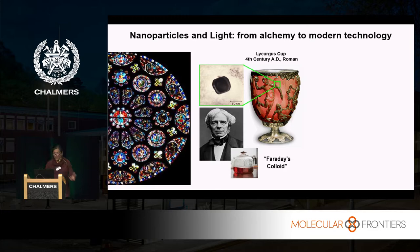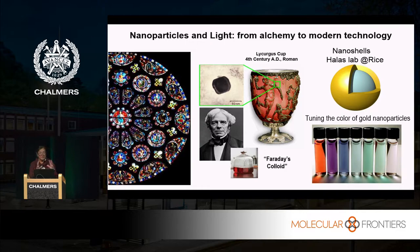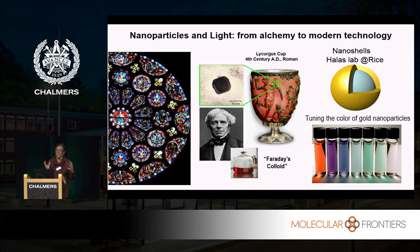Quite some time ago, we began to play with this concept and look at a very simple variation of a sphere. Instead of a solid sphere, we developed a hollow sphere called a nanoshell. When you add this hollow core to the structure, you've created a tuning knob. If you can control the inner and outer radius of the shell, you can then control the color with which this nanoparticle will absorb light.